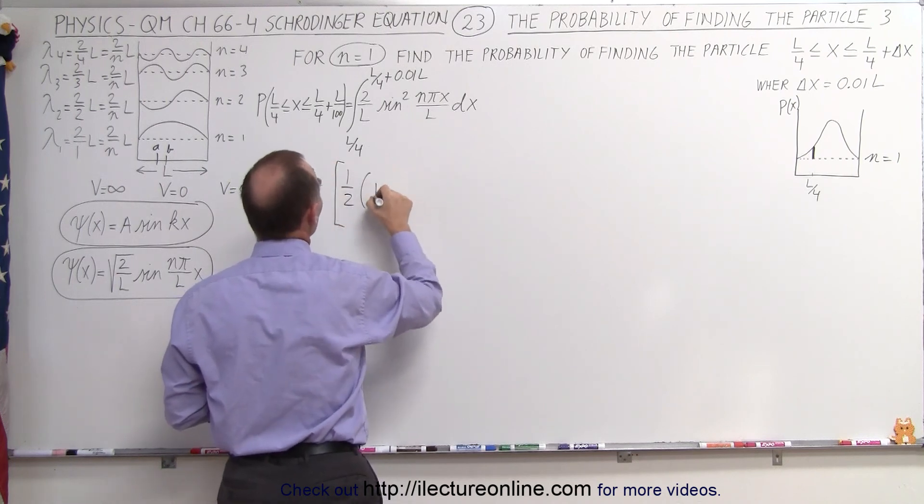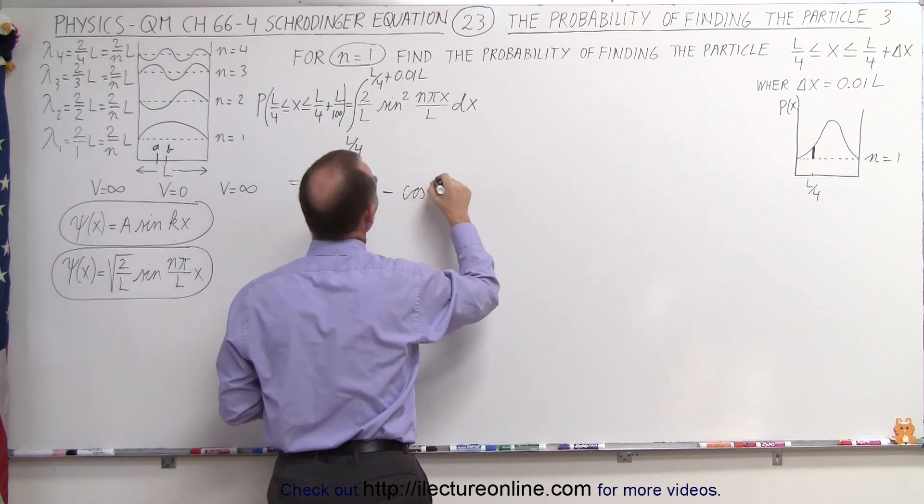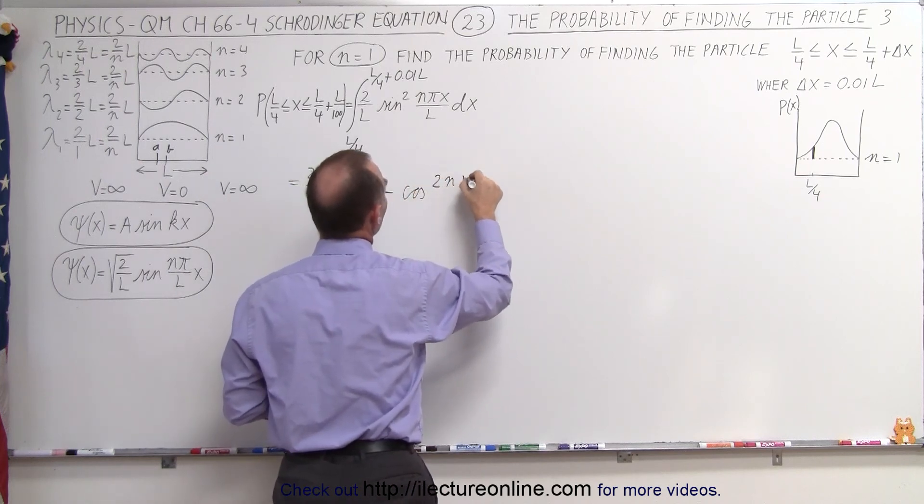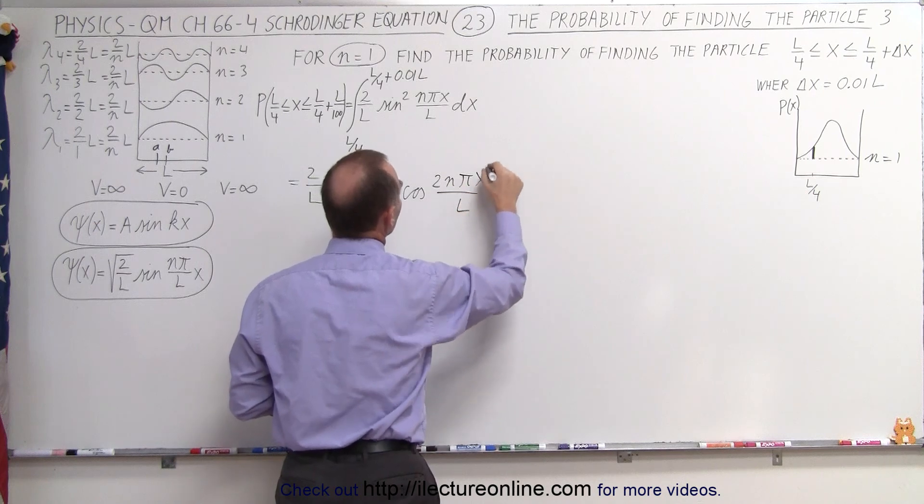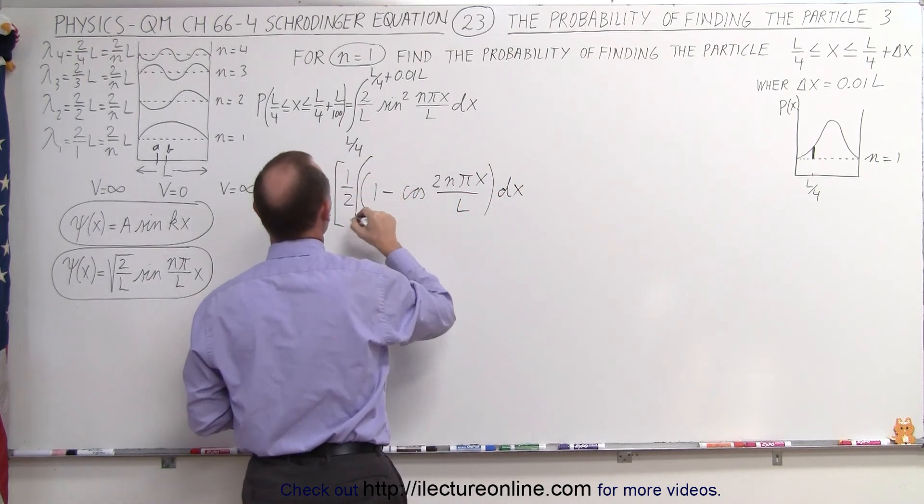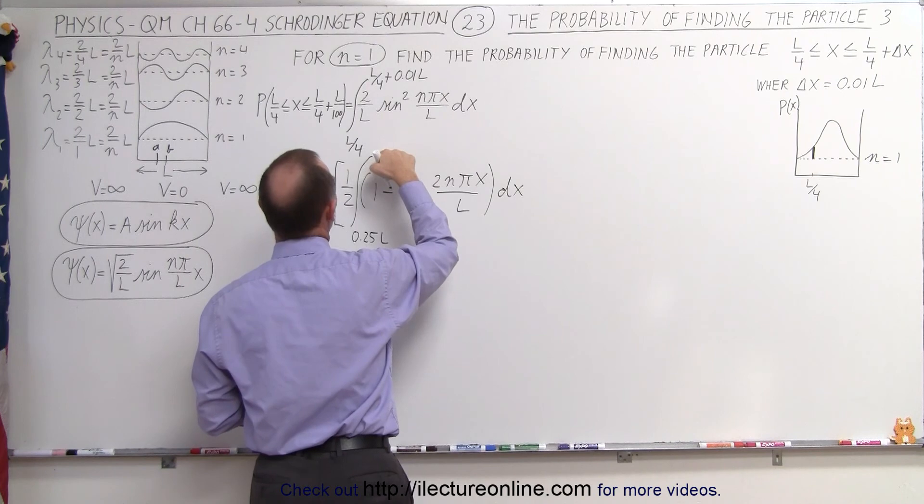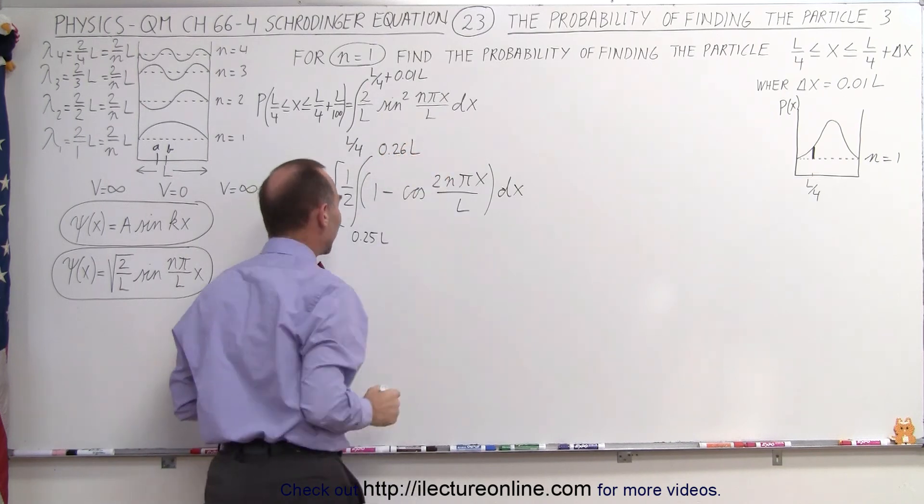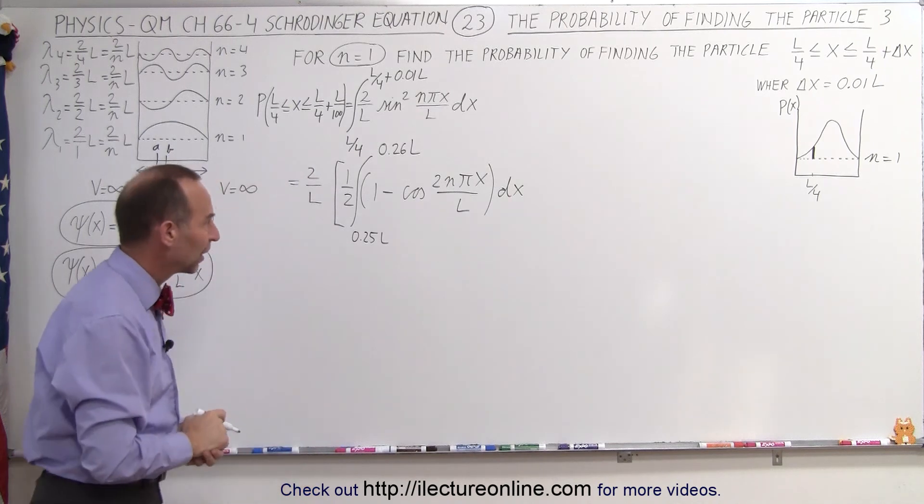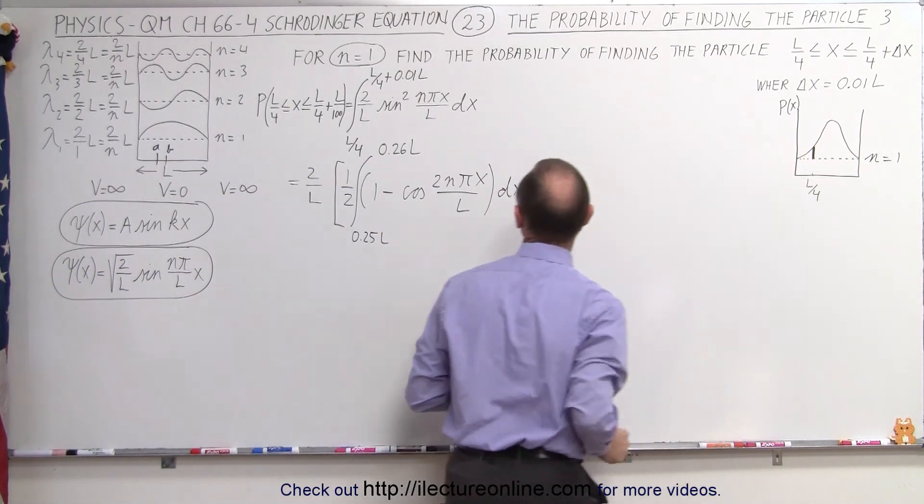Which is 1 half times 1 minus the cosine of twice the angle, the cosine of 2 times n pi x over L, all of it times dx. We're going to integrate that from L over 4, which is 0.25L, to L over 4 plus 1 over 100 of an L, which is 0.26L. Might be easier just to write it like that. So we're trying to find the probability in a very small region right there.